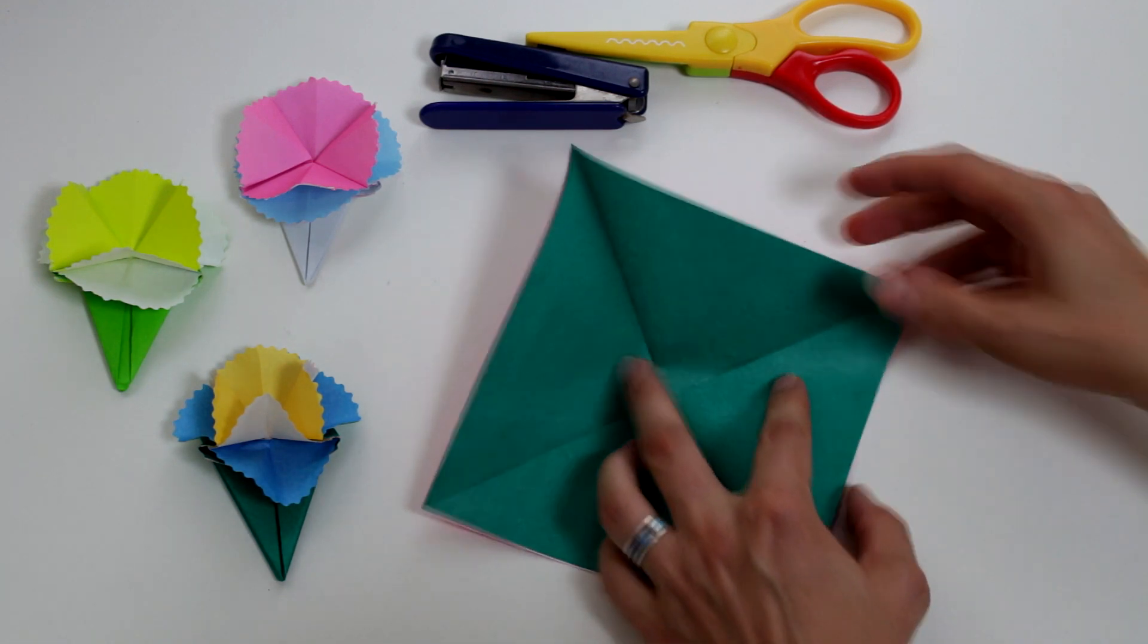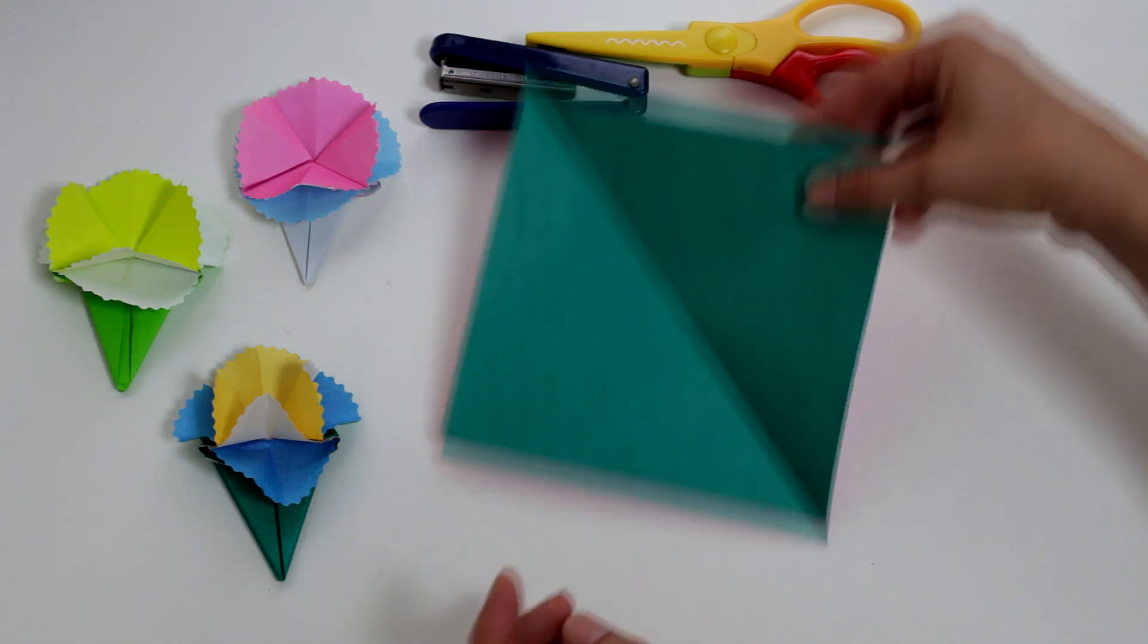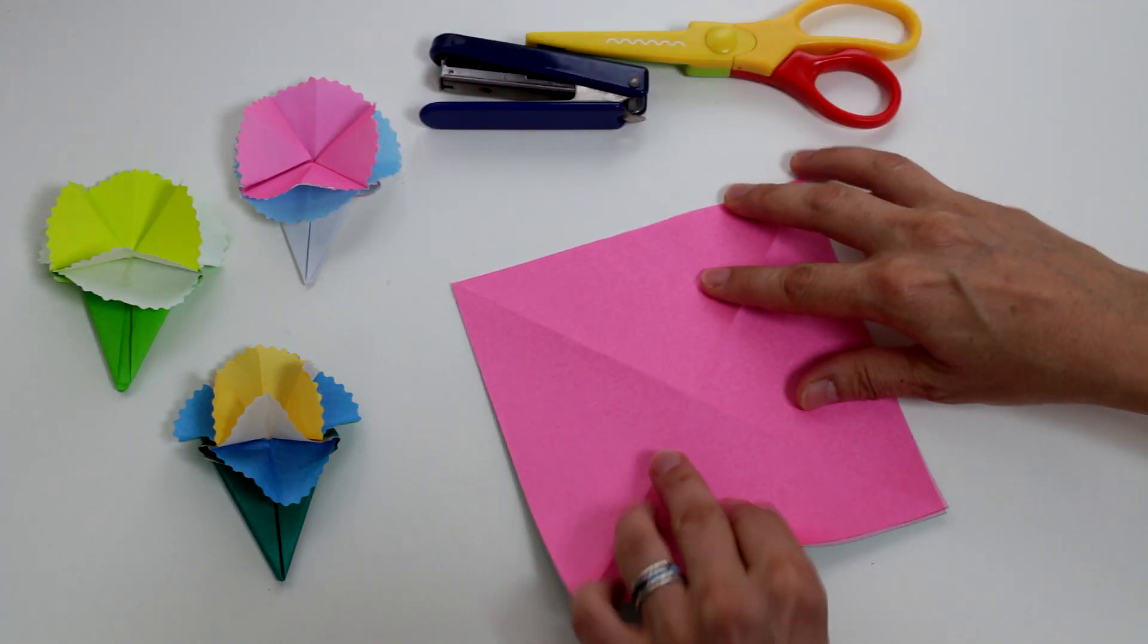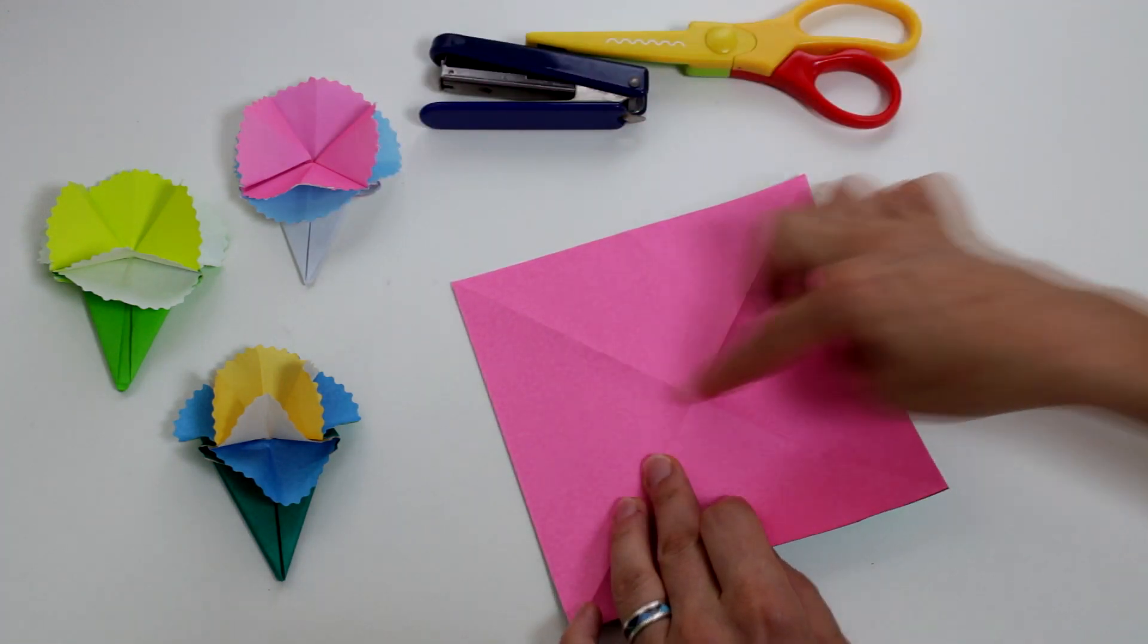Okay, open it again and turn it on the other side. Now we're going to fold it horizontally in half.